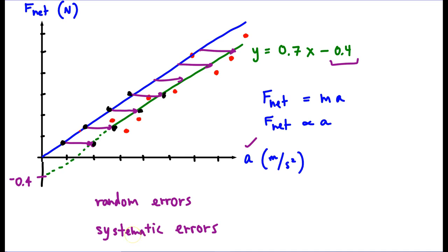So that's how we think about random and systematic errors. Now in addition to saying which direction the graph was shifted, which direction your data was shifted, you can also identify how big you think that shift was.